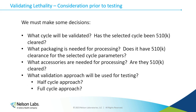When validating lethality, we need to make some key decisions before we start testing. We need to decide what cycle will be validated. Has the selected cycle been 510(k) cleared — is it part of a machine that has been 510(k) cleared? What packaging do we need, and does that packaging have 510(k) clearance for the selected cycle parameters? What accessories are needed, and are they 510(k) cleared? And what validation approach will we use? The half-cycle approach is very commonly used for these device types, while the full cycle approach is used less commonly and tends to be better applied in industrial validations.